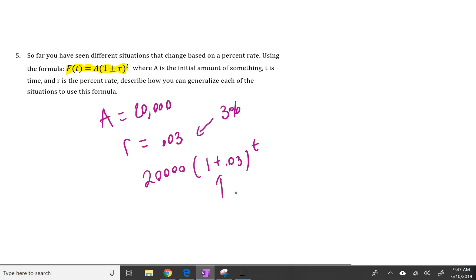For the depreciation in problem 2, we still did 20,000 times 1 minus 0.03 to the T power, and that's how we got 0.97. So this formula is a way of summarizing that process in a more formulaic way if you prefer.